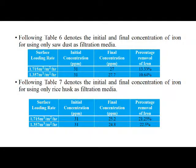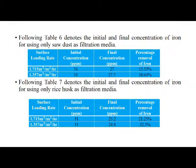Table 6 — sawdust only as filter media: At SLR1 (1.715 m³/m²/hour), initial concentration is 31 ppm, final concentration is 27 ppm, percentage removal is 13.33%. At SLR2, initial concentration is 31 ppm, final concentration is 29.7 ppm, percentage removal is 10.64%. Table 7 — rice husk only as filter media: At SLR1, initial concentration is 31 ppm, final concentration is 25.2 ppm, percentage removal is 21.25%. At SLR2, initial concentration is 31 ppm, final concentration is 24.8 ppm, percentage removal is 22.5%.